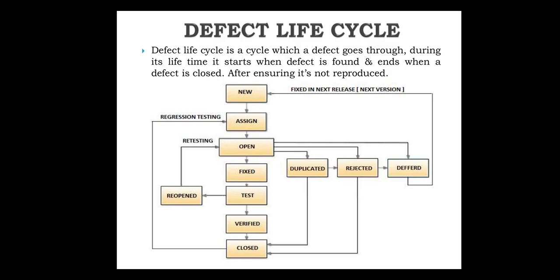When the defect is opened, you need to check whether it is a duplicate — meaning the same kind of defect has already been discovered. Then check if the defect is rejected, meaning it is not a valid defect. Next is deferred: if the severity and priority are both low, the defect can be fixed in the next release. If the defect is duplicate or rejected, it can be closed.